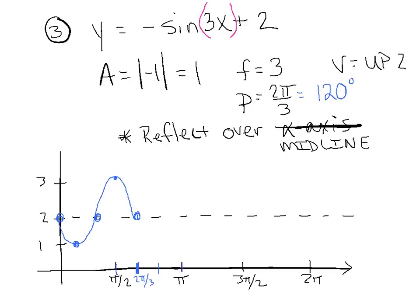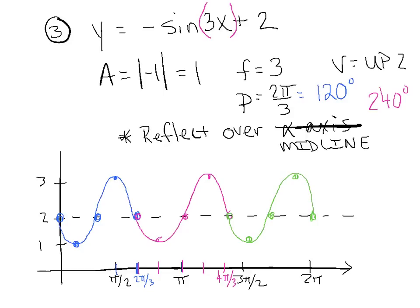The second cycle completes at 240 degrees, which is 4 pi over 3. Starting with a root, ending with a root, the middle root is halfway between. Because of the reflection, halfway between the first two roots is a min, and halfway between the second two roots is a max. The third cycle completes at 2 pi following the same pattern. That's what negative sine of 3x plus 2 looks like — the maximum height is 3 and the minimum height is 1, which is another popular exam question.